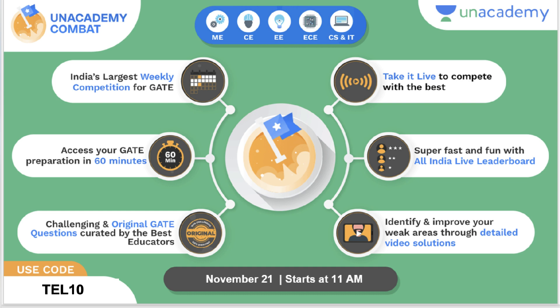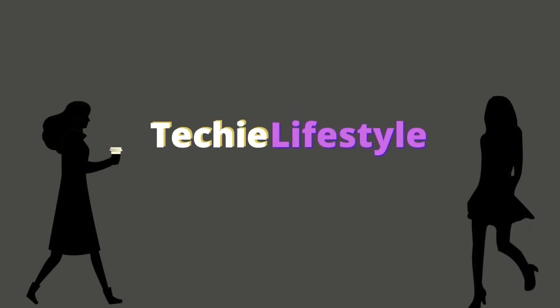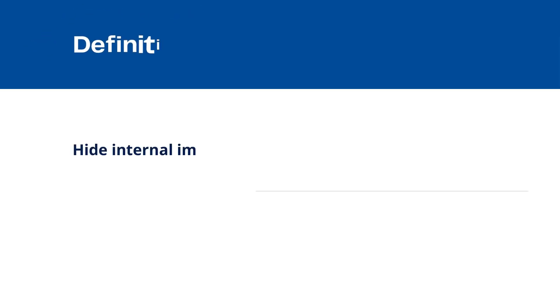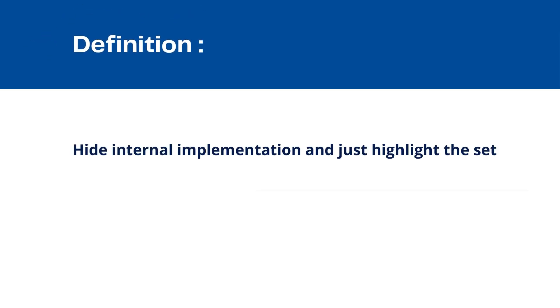What are you waiting for? Go ahead and check it out — all links are in the description. Now let's proceed with the video. Starting with the definition of abstraction: hide internal implementation and just highlight the set of services — that is called abstraction.